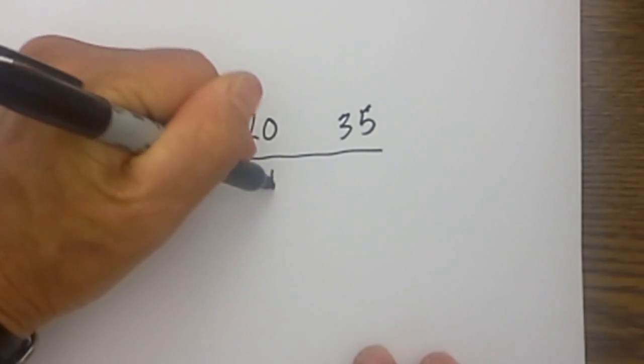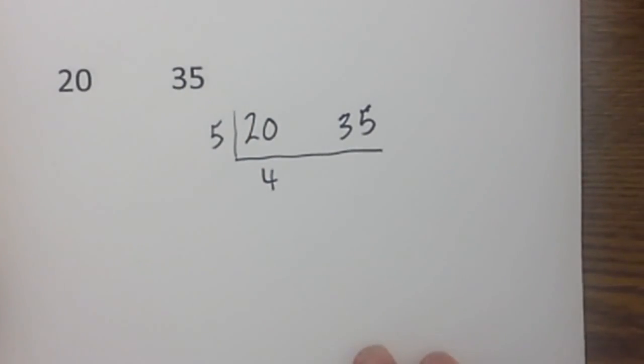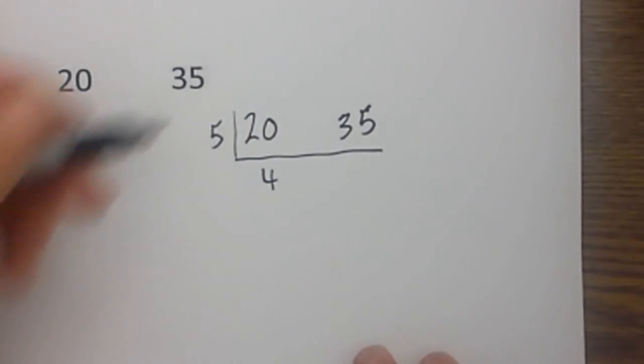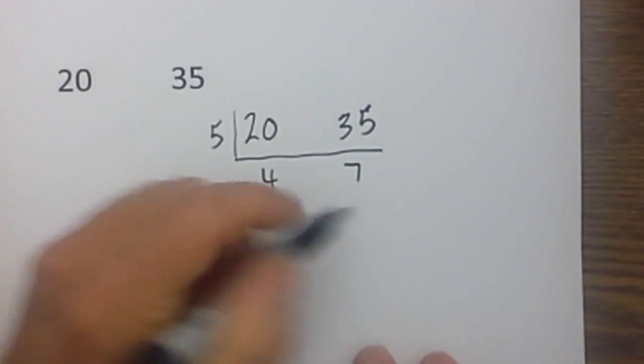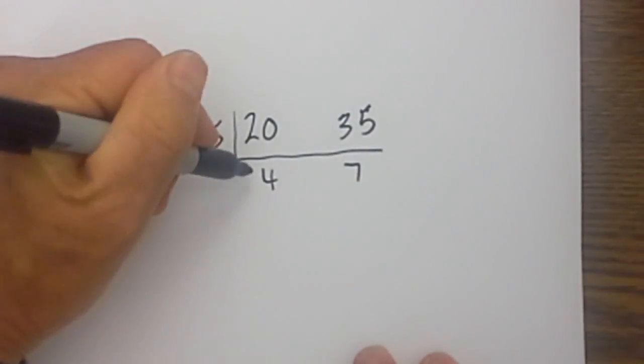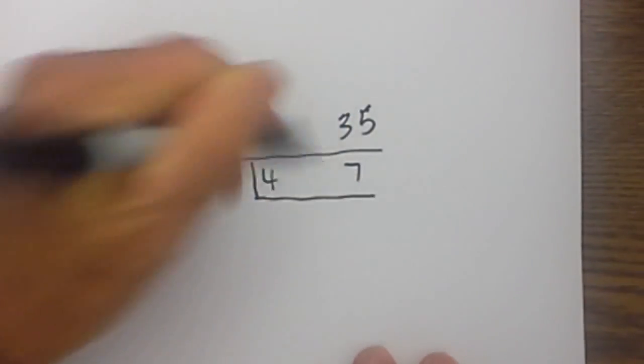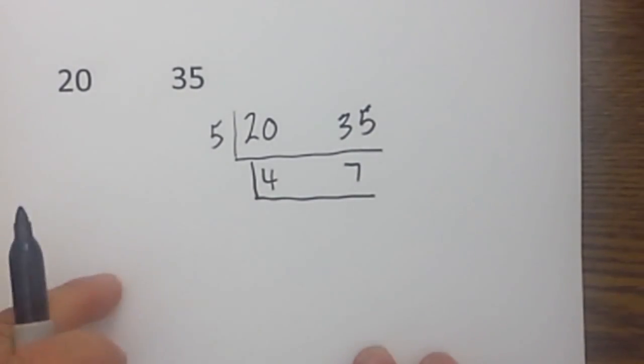So 5 goes into 20 four times and 5 goes into 35 seven times. 7 is prime as 5 is prime, but both numbers are not prime yet so it is not finished.